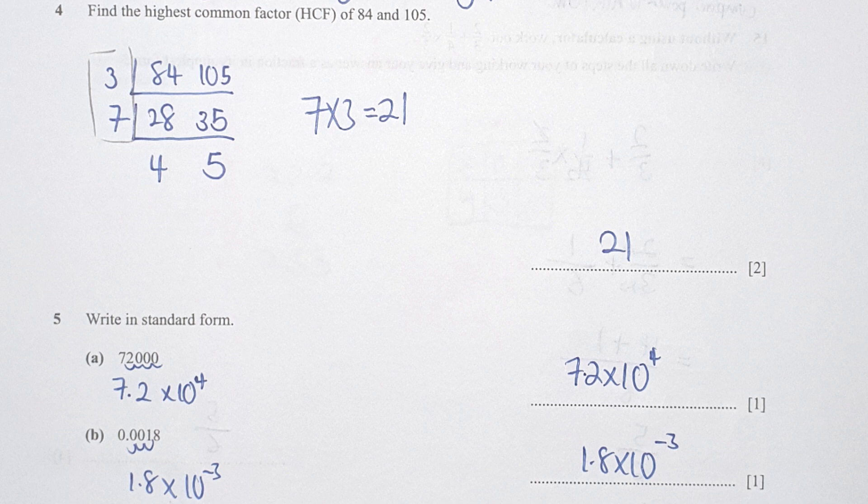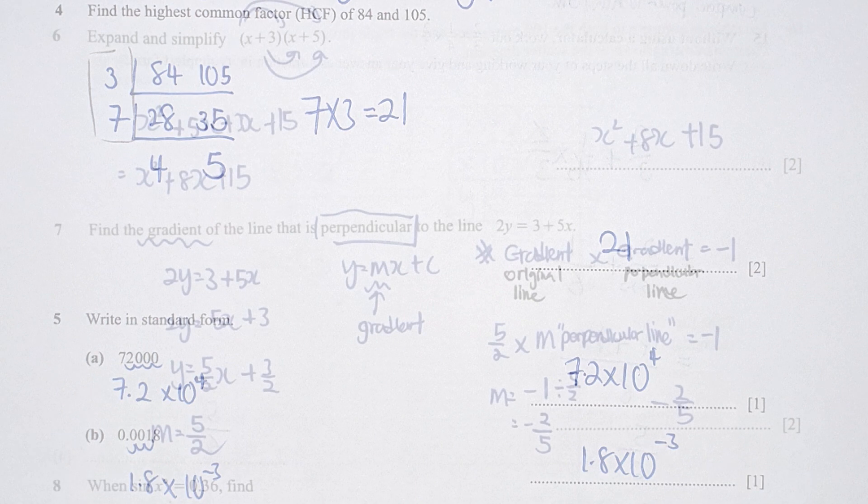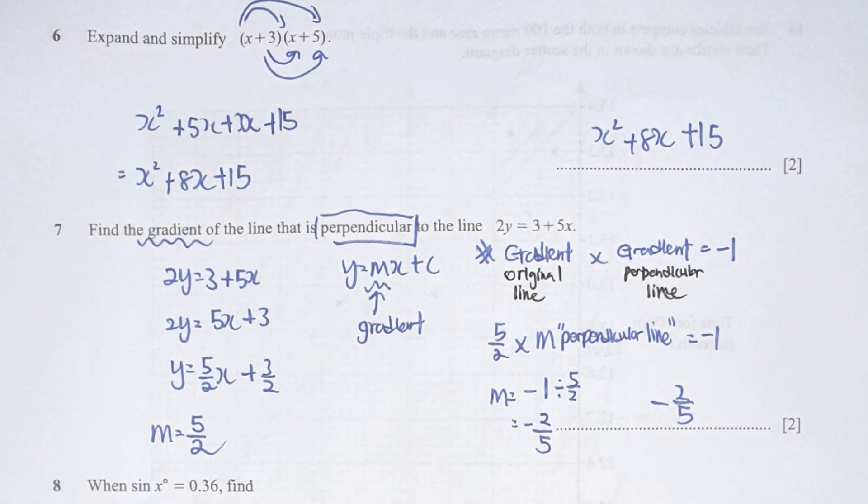For question 6, you're going to take the x multiplied by x plus 5 and the 3. Your final answer after the rearrangement should be x squared plus 8x plus 15.